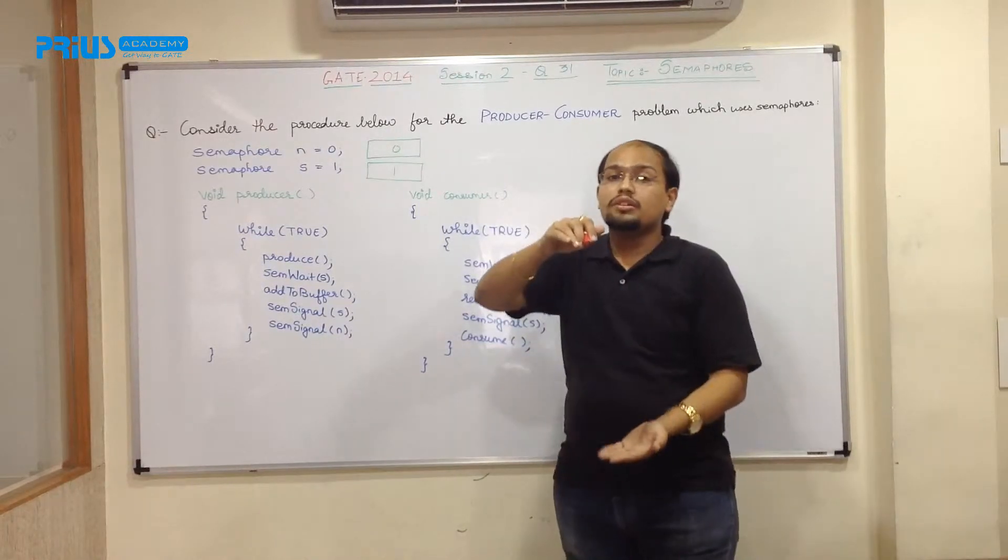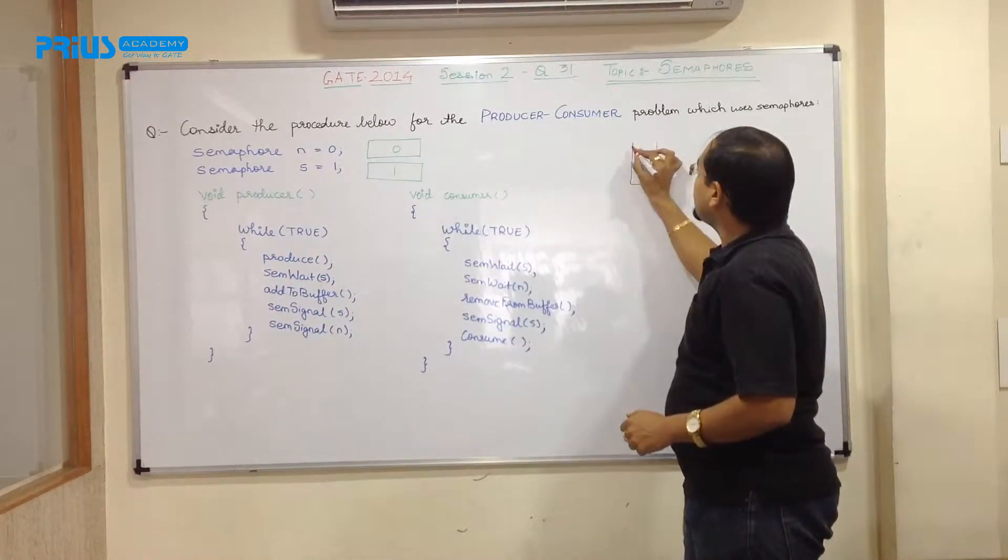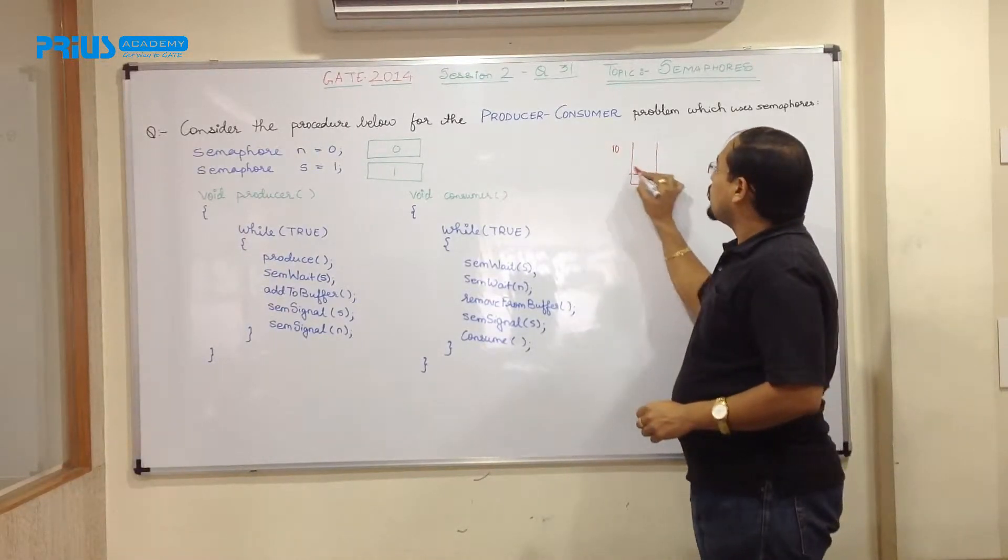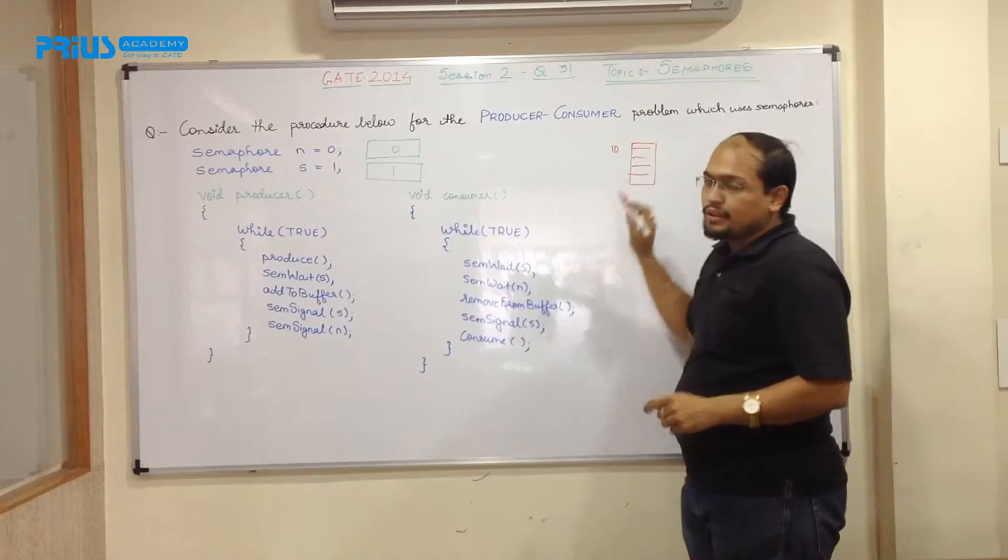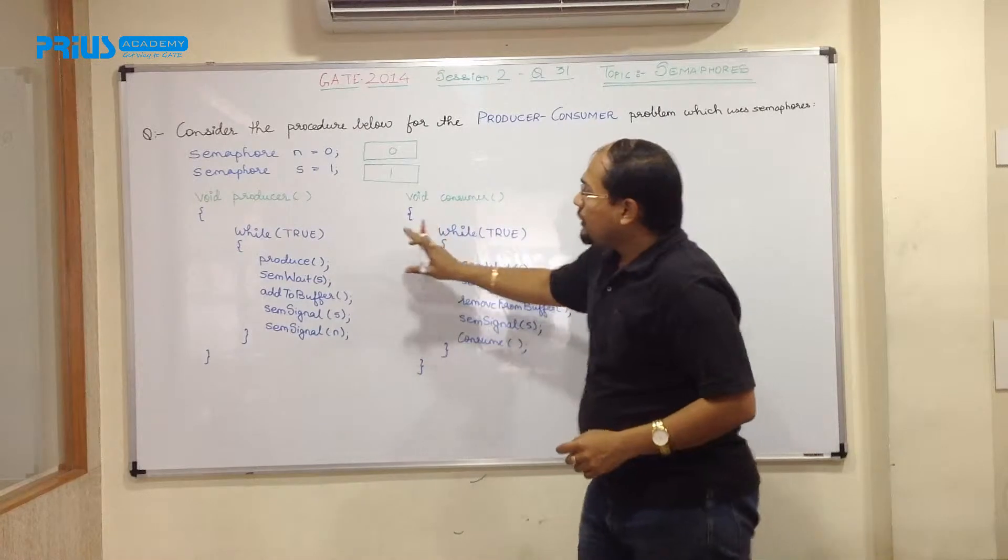And producer cannot put in the things again and again, it needs to fill it only to the certain limit. If I am saying that the limit, let's say this is the limit where I can have insert only 10 elements, so producer can produce only 10 elements and then consumer will consume all those 10 elements.